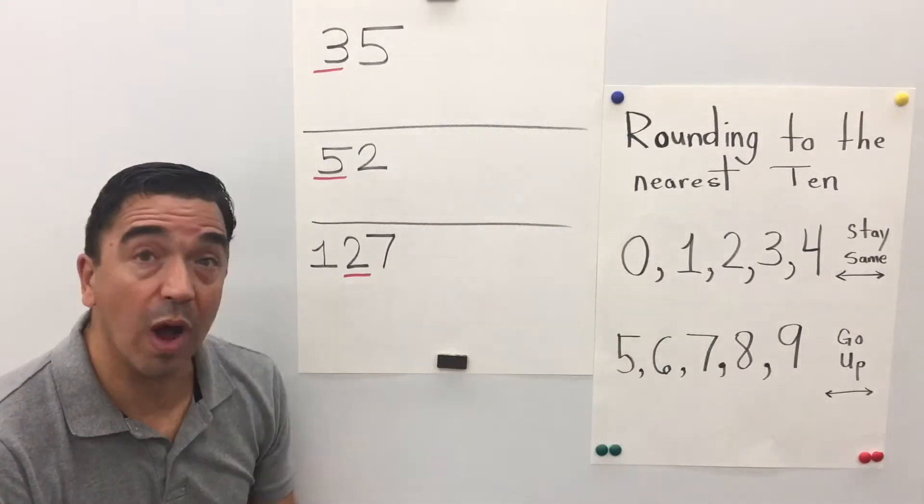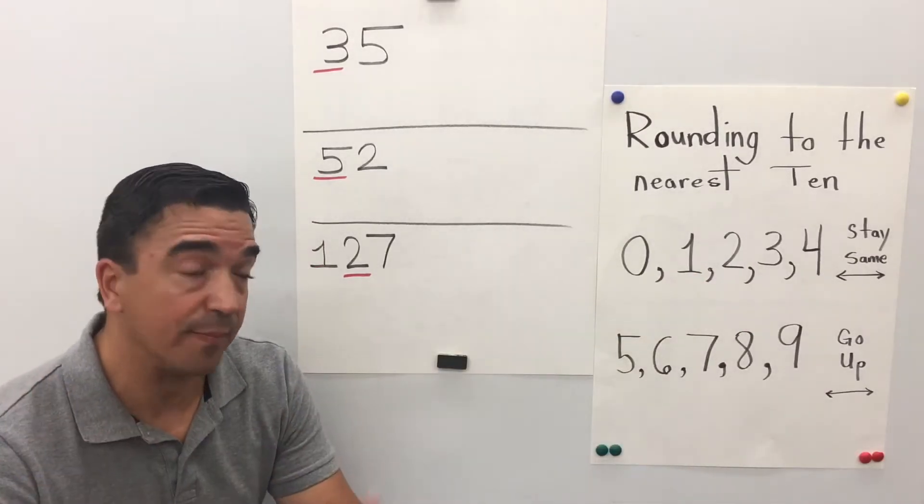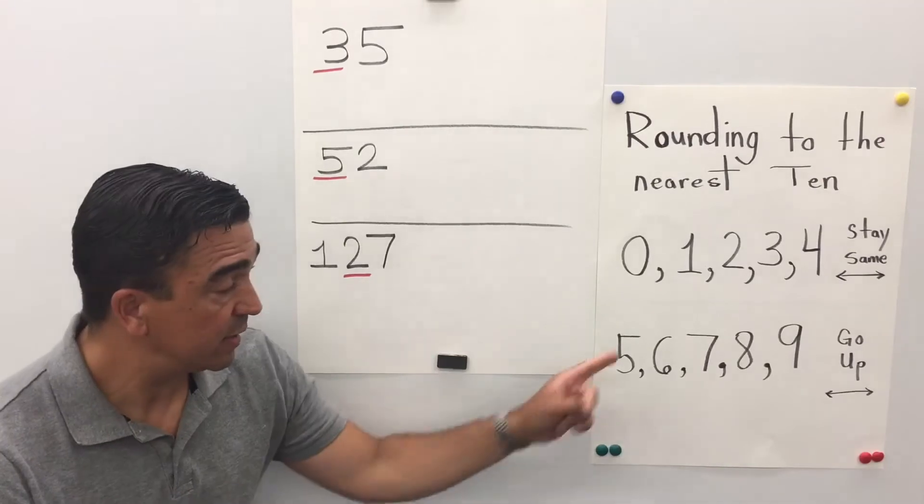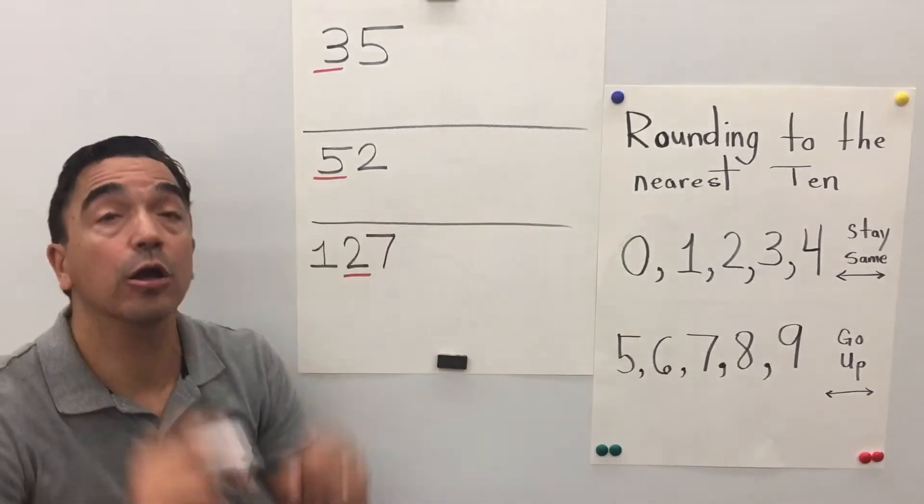0, 1, 2, 3, 4 stay the same. 5, 6, 7, 8, 9 go up.